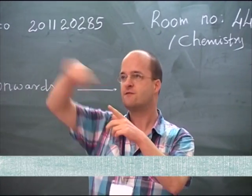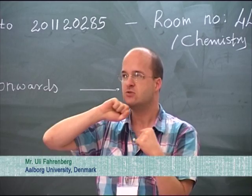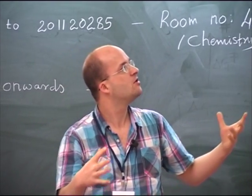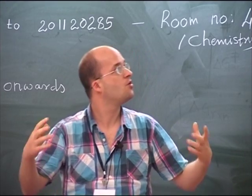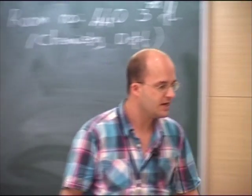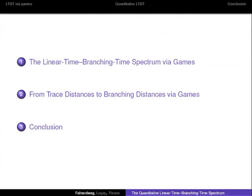Imagine a hybrid system — you have two different ways where your variables can evolve, and the control engineers have ways to measure distances between executions. What we want to do is to convert those linear distances, those trace distances, to branching distances, like bisimulation distance, simulation distance, ready simulation distance. Here is the outline of the talk: I will first recall the linear time branching time spectrum of different pre-orders and equivalences, then explain how to apply games to go from linear distances to branching distances, and then conclude.